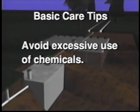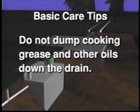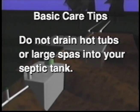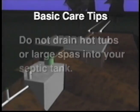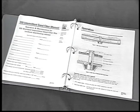Occasional use of bleach in laundry is acceptable, but avoid using automatic toilet bowl cleaners, which continuously feed bleach into the septic tank. Do not dump cooking grease and other oils down the drain — they will clog up an ISF or any other kind of on-site system. Garbage disposals should not be used, because they increase the need for tank pumping and general maintenance. Hot tubs or large indoor spas should not be drained into the septic tank, as the extra water may overload the system. If you use a water softener or water purifier, do not drain the backwash into your septic tank — it is safe to discharge it directly into the ground. A complete description of proper use and simple annual maintenance can be found in OSI's ISF Operation and Maintenance Manual.